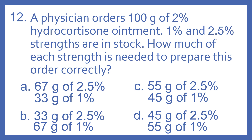A: 67 grams of 2.5% and 33 grams of 1%. B: 33 grams of 2.5% and 67 grams of 1%. C: 55 grams of 2.5% and 45 grams of 1%. Or D: 45 grams of 2.5% and 55 grams of 1%.